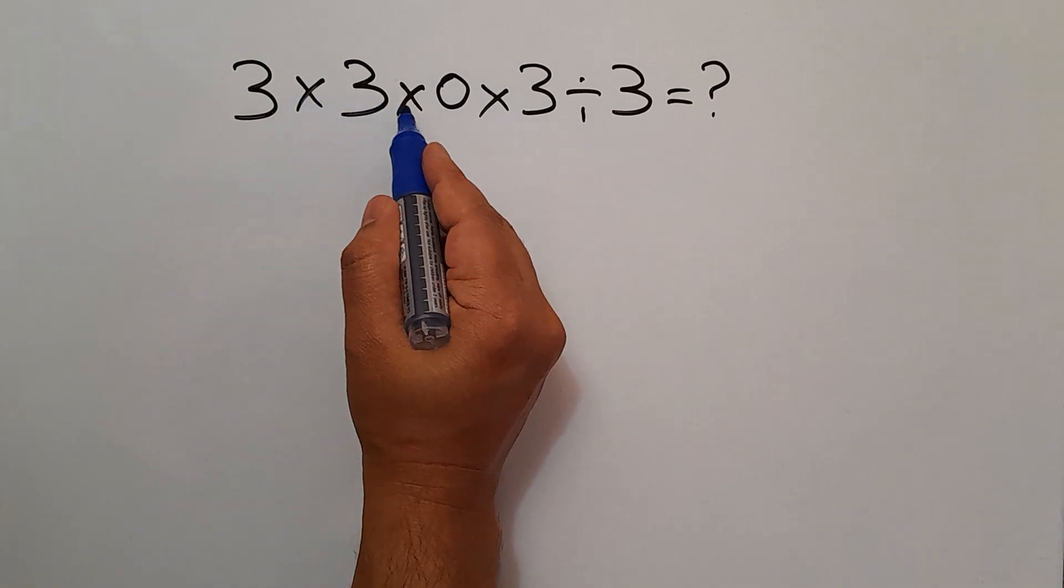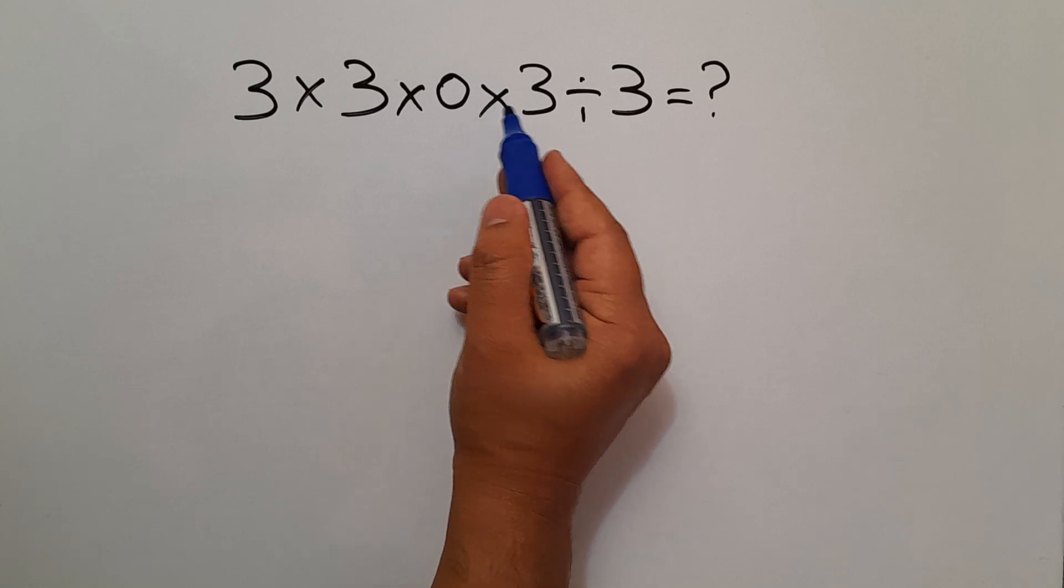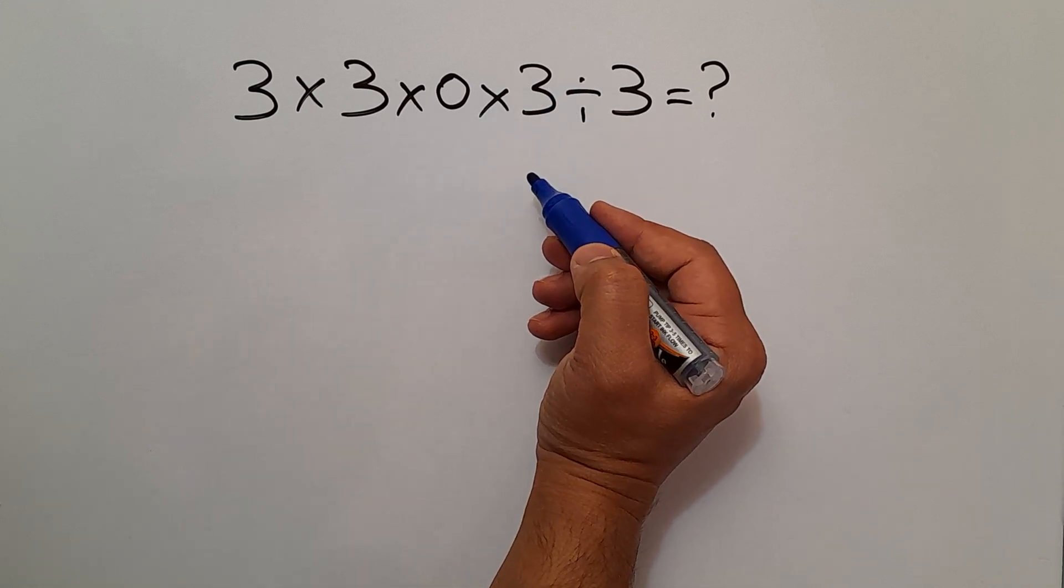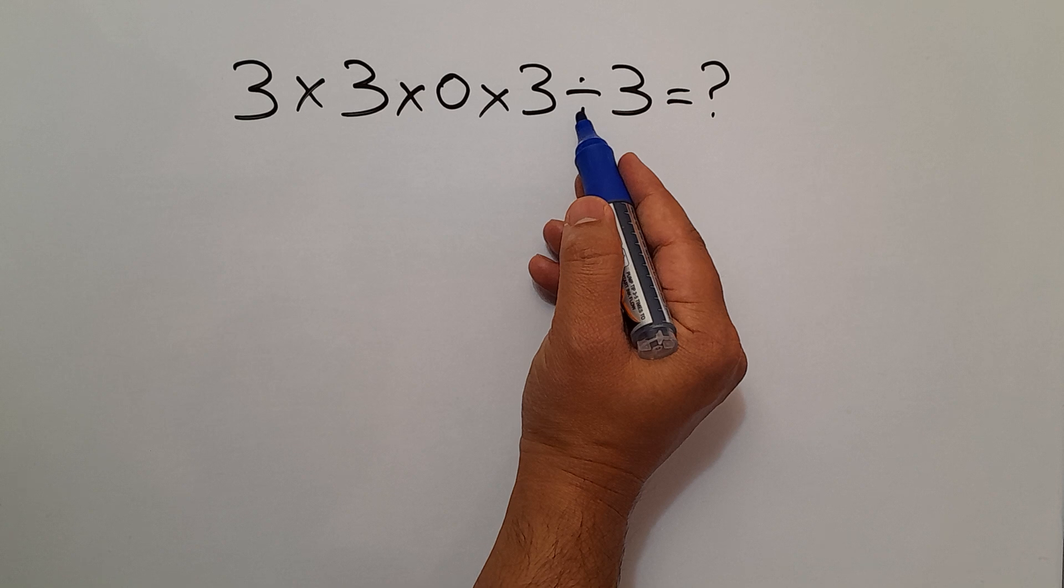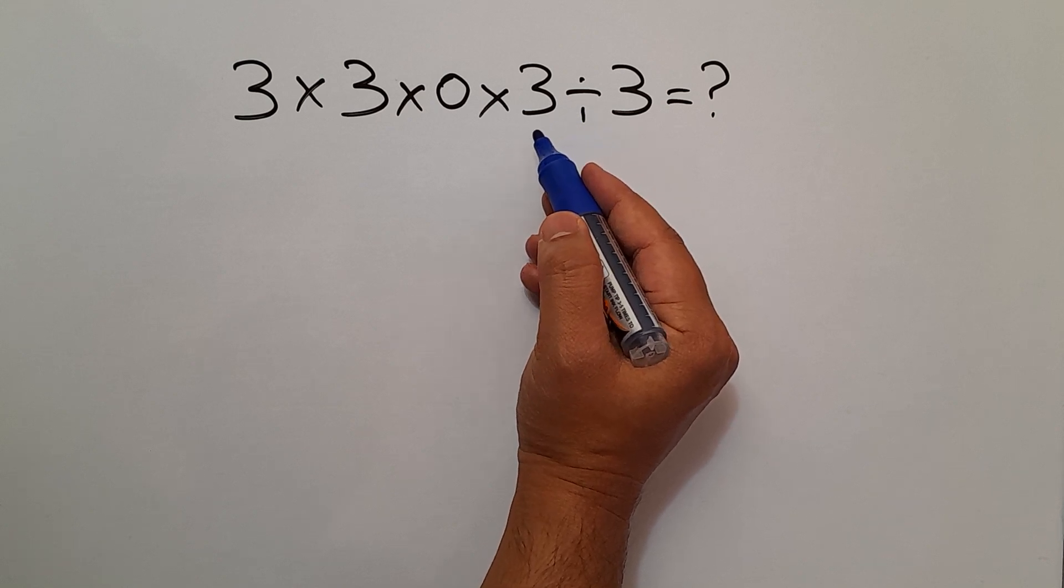We have three multiplications and one division. As we know, multiplication and division have equal priority, and we have to work from left to right.